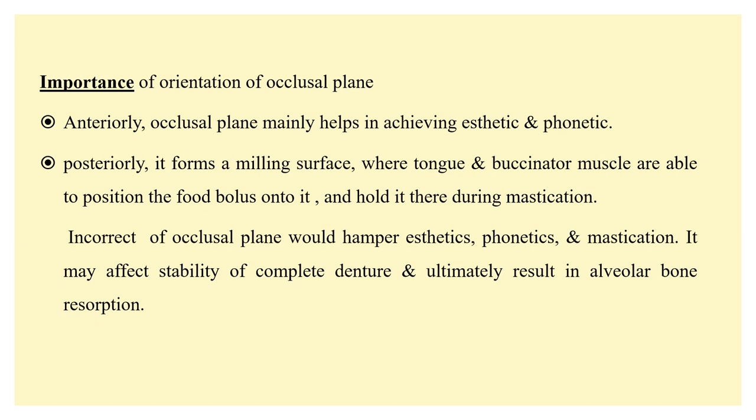In the posterior part, your occlusal plane forms a milling surface where your tongue and the buccinator muscle — the buccinator mechanism you would have heard about in orthodontics — help in placing the bolus on the occlusal surfaces of the teeth and aid mastication. Any incorrect occlusal plane would hamper aesthetics, phonetics, and mastication; it may affect the stability of complete dentures and ultimately also affect alveolar bone resorption. Your residual ridge underlying the prostheses is the foundation, so any adverse changes affecting the bone will lead to continuous resorption and affect stability.